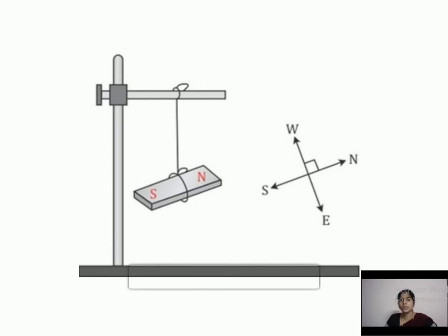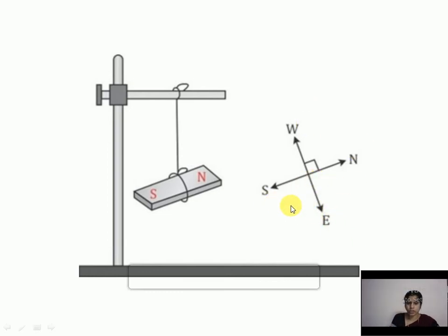The four major directions are north, south, east, and west. We can also have four more directions: north-east, north-west, south-east, and south-west. These are the other four directions.